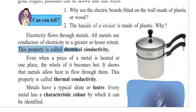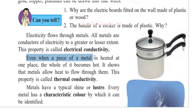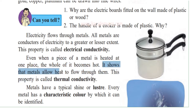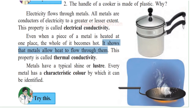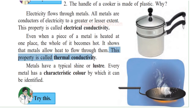This property is called electrical conductivity. And even when a piece of metal is heated at one place, the whole of it becomes hot. Take a spoon and try to heat it — after some time, even the handle of the spoon will become hot. This shows that metals allow heat to flow through them. This property is called thermal conductivity.